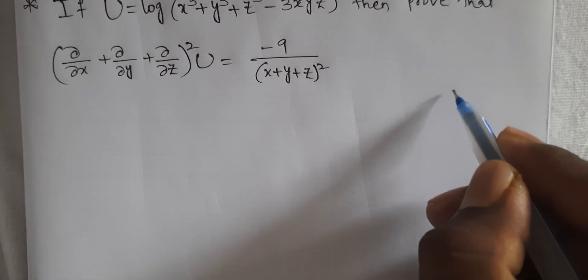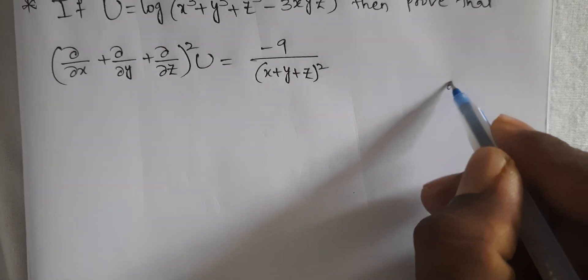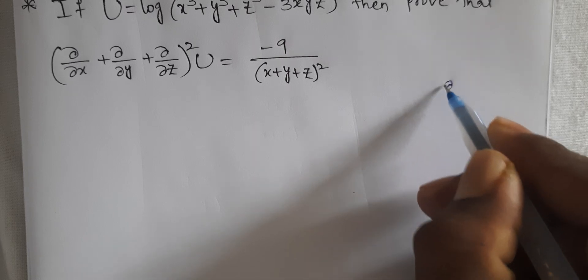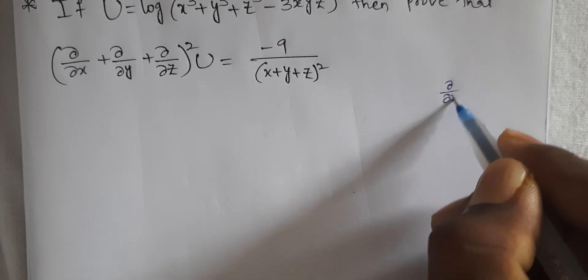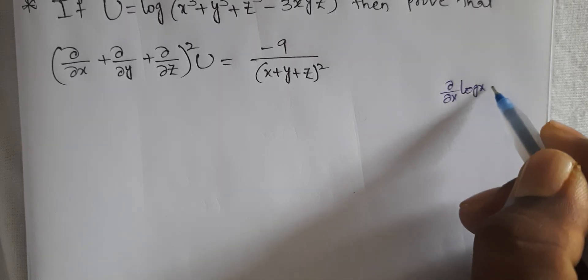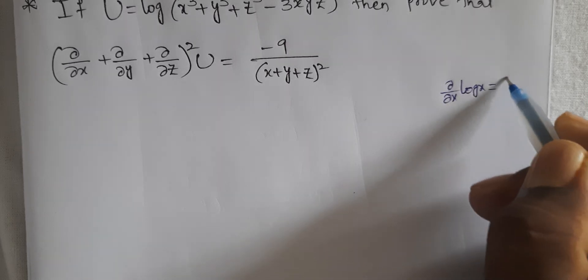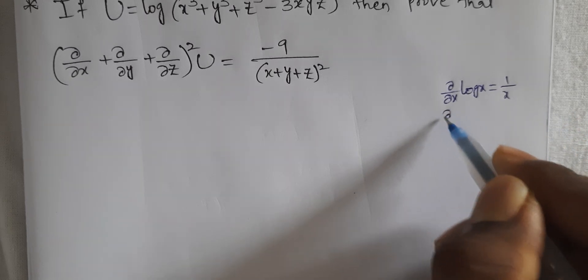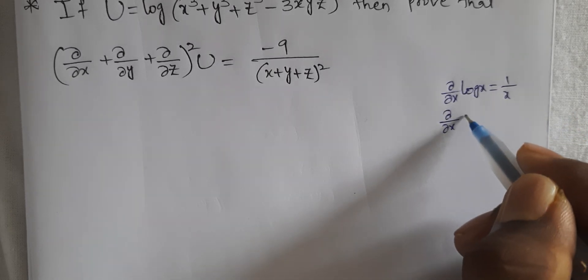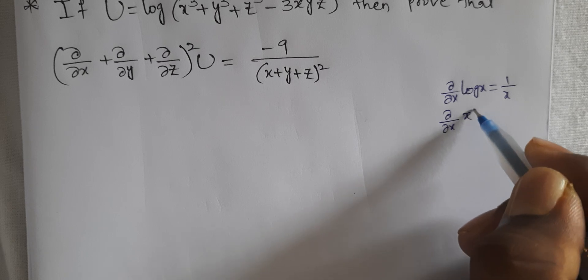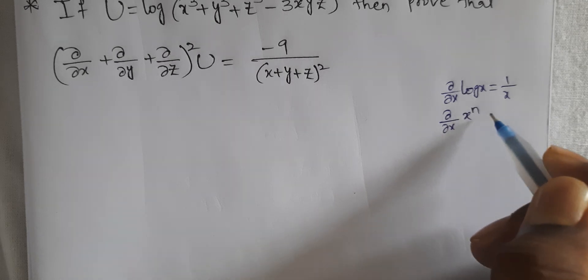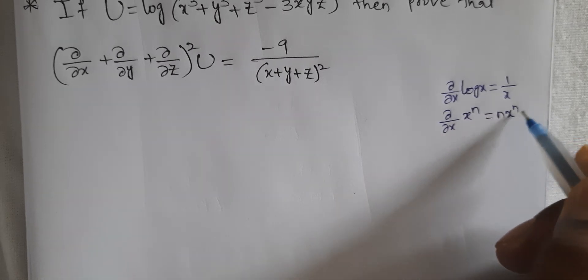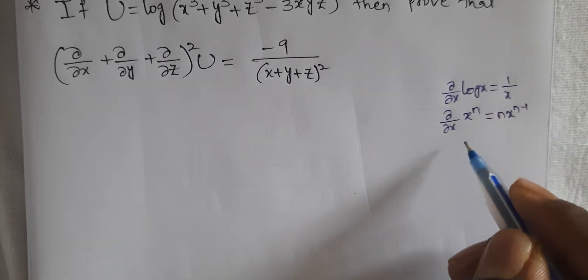First, recall the rules: ∂/∂x of log x equals 1/x, and ∂/∂x of xⁿ equals n·x^(n−1).